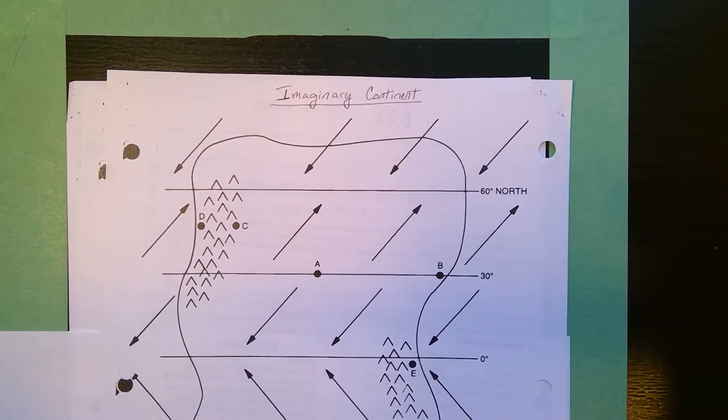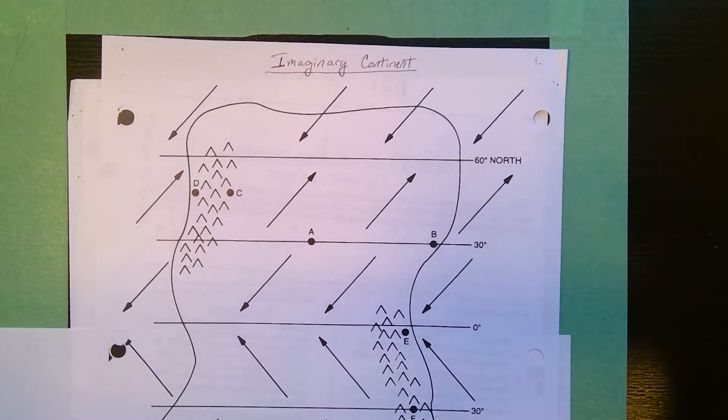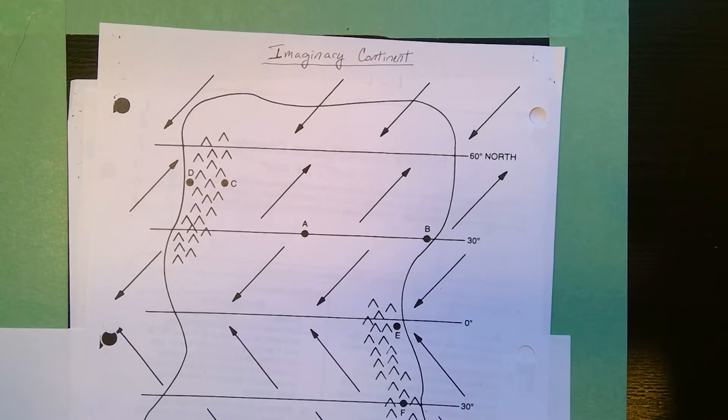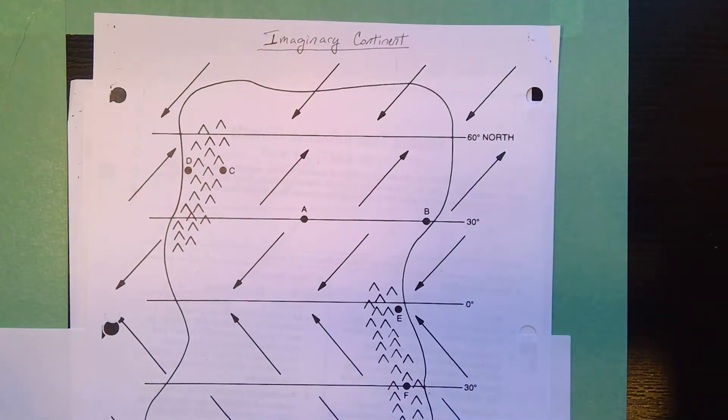If I zoom out a little bit, we might be able to see a wider region. They don't always give you as much information as they did on this one. They already drew in the planetary pressure belts. You'll notice the latitudes tend to be the latitudes that they give you. They give you 0, 30, 60, not usually 90.